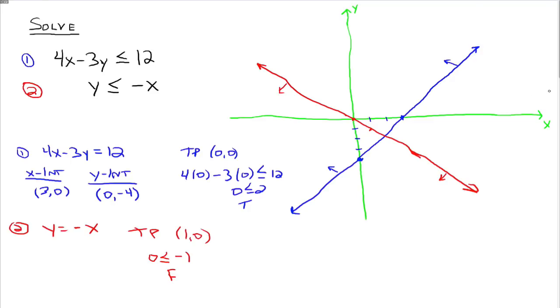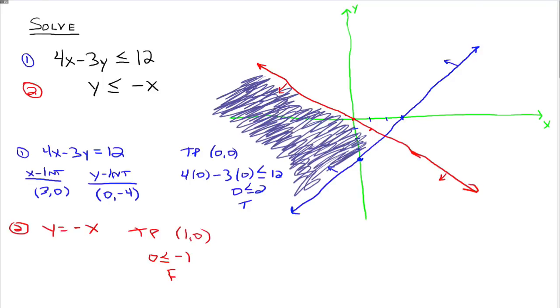And then we say, where do the two areas overlap? And it's in this region right here. So that's the region that we shade. So kind of get the idea. That's about all I want to say about systems of inequalities. Study well. Please let me know if you have any questions.